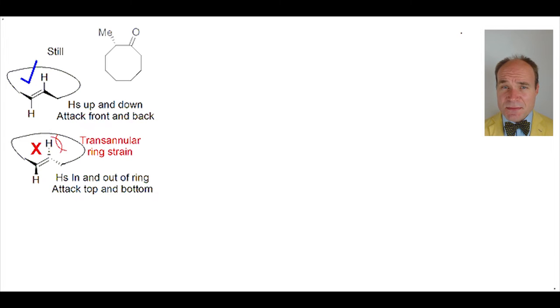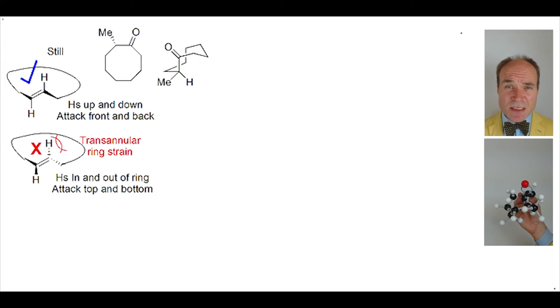Let's consider this methyl cyclo-octanone. Initially, we need to think in 3D and reflect upon the likely conformation of the ring. The lowest energy conformation is boat chair, and it is highly energetically beneficial for the methyl group to be equatorial rather than axial, as that would have undesirable 1-3-diaxial interactions.